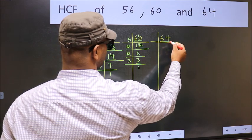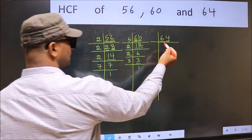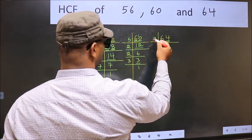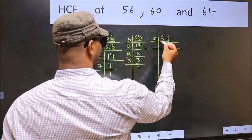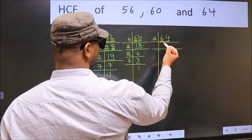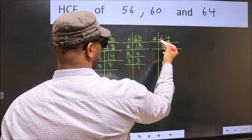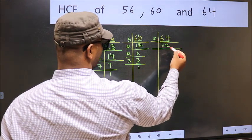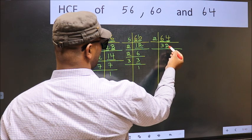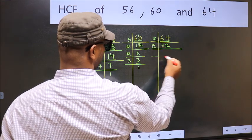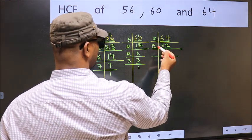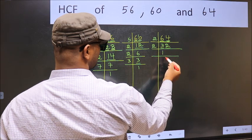Now the other number 64. Last digit 4, even, so take 2. First number 6. When do we get 6 in 2 table? 2 times 3 is 6. The other number 4. When do we get 4 in 2 table? 2 times 2 is 4. Now last digit 2, even, so take 2. First number 3. A number close to 3 in 2 table is 2 times 1 is 2.